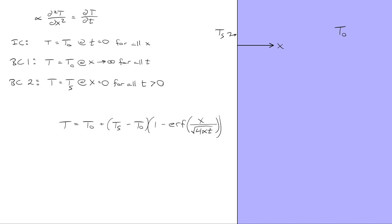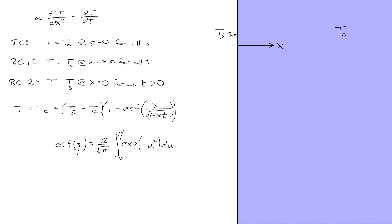The solution isn't easy to interpret at first glance. Here ERF stands for the error function. In this case we're taking the error function of x divided by the square root of four times the thermal diffusivity times time. This is the definition of the error function of some variable eta — it's an integral that can't be solved analytically, so as a result you often go to a table of values, or it's available in most software such as MATLAB or Microsoft Excel.